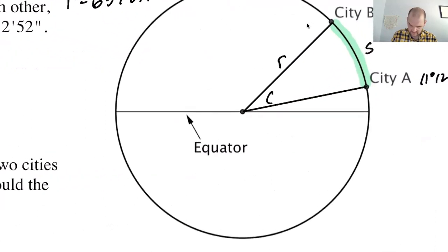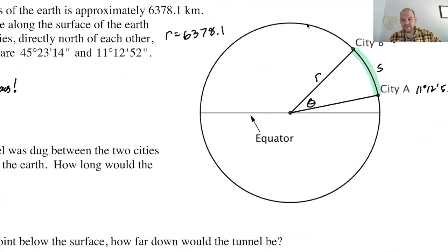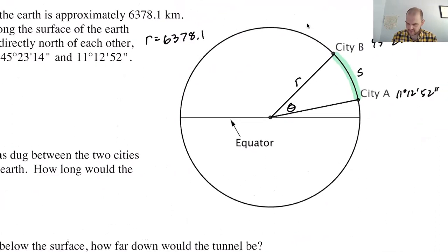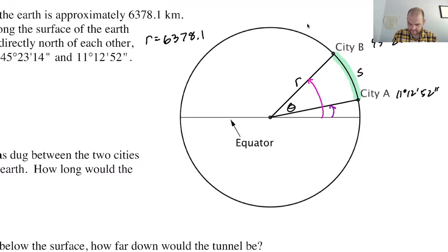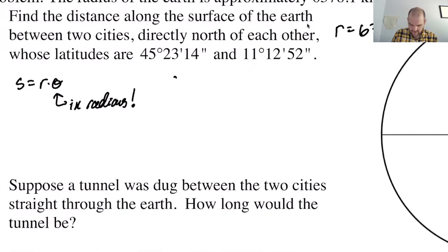I'm going to call this theta and find it in radians. To find it, there are two approaches: by hand or by calculator — we're going to use the calculator. I'm going to find the difference between the two angles, because the difference gives me theta. So theta equals 45 degrees, 23 minutes, 14 seconds minus 11 degrees, 12 minutes, 52 seconds. I'll let the calculator handle that.